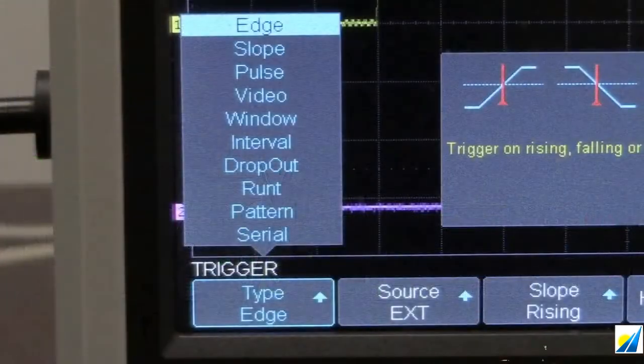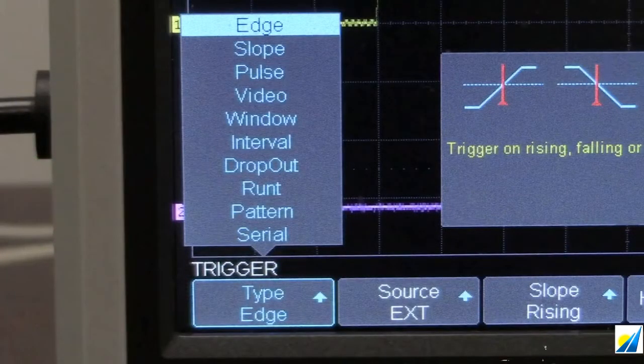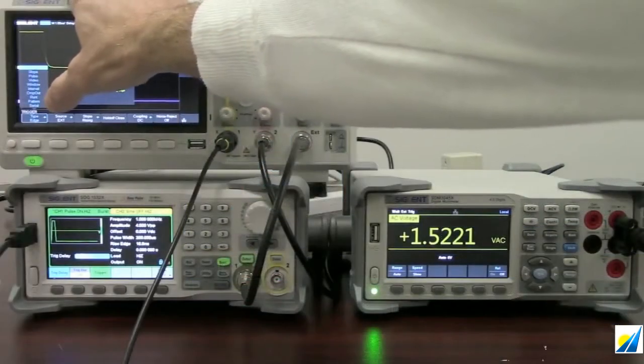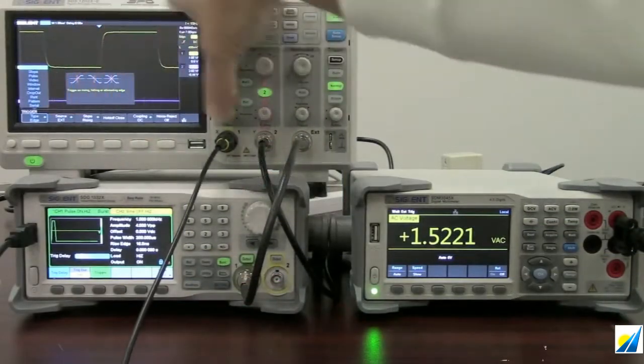So I'm going to go set up trigger, take a look at edge, slope, pulse, video, window. So it has all of the normal trigger types that a normal oscilloscope channel has.